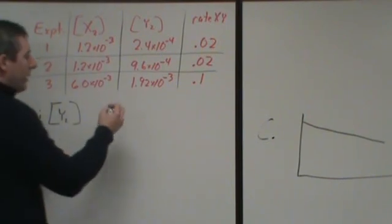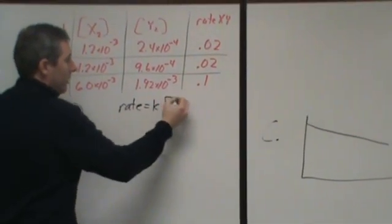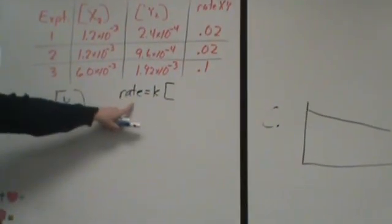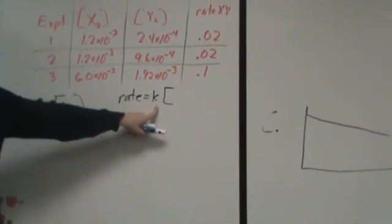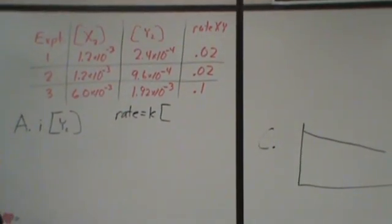So one of the key ideas behind all of this is that every single one of these is going to start off where your rate law says rate is equal to a constant times the concentration of each reactant raised to some exponent. Typically that's going to be 0, 1, or 2.